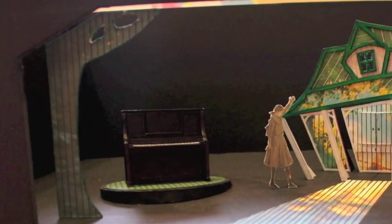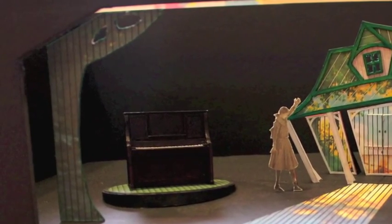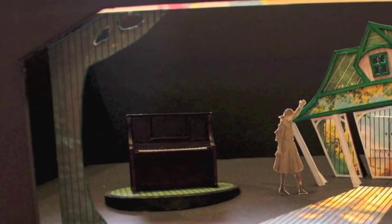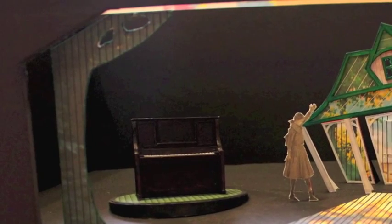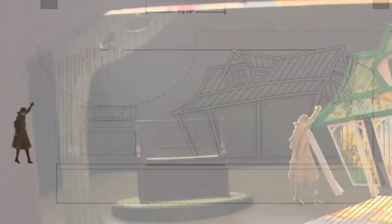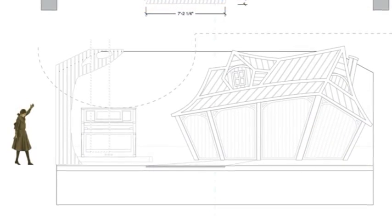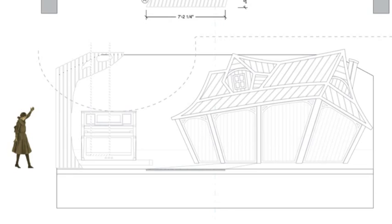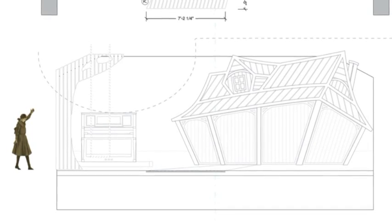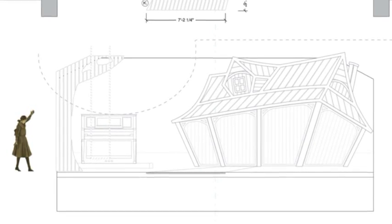Downstage right, there is a tree to anchor some of our outdoor scenes. In front of it will be a working swing, and just behind it, a clothesline filled with diapers that drops down to indicate Mrs. Blewitt's house.